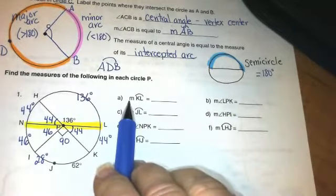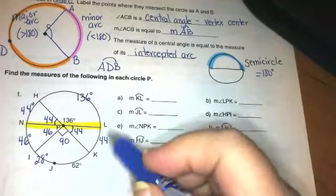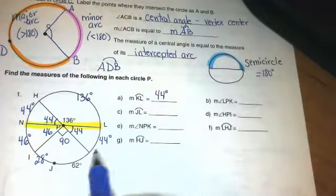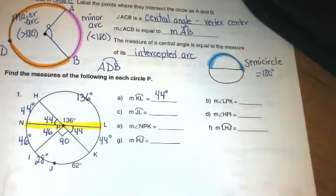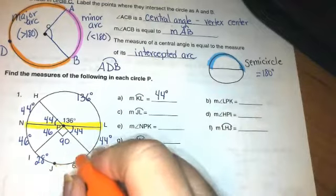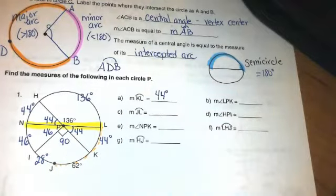So now I can come over here and fill in the blanks. Arc KL, and when you see the m in front of it, that's just asking you for the measure, that's how many degrees. So don't panic when you see the m. The measure of KL, I've got that, it's 44. The measure of arc JL, now to get JL, I've got to go from J to L.